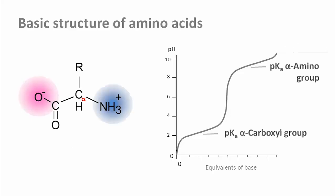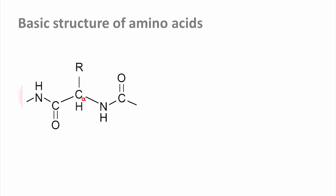The alpha carboxyl groups of free amino acids are all relatively strong acids and have pK values of between 1.8 and 2.6. Similarly, the pK values of the alpha amino groups are all between 9 and 10.5. However, it is important to remember that these are no longer free carboxyl or amino groups when the amino acid is part of a protein chain.